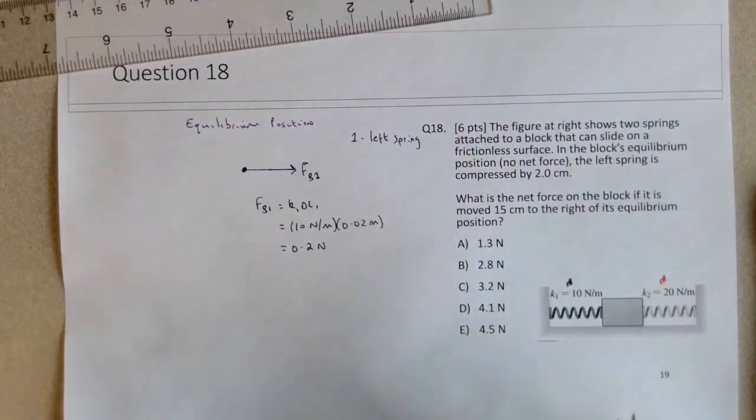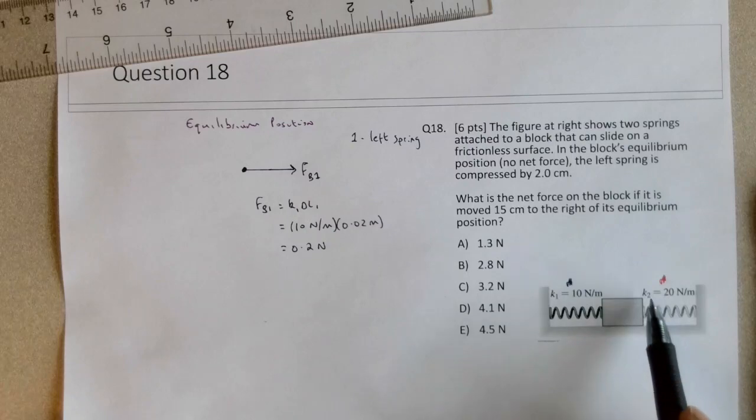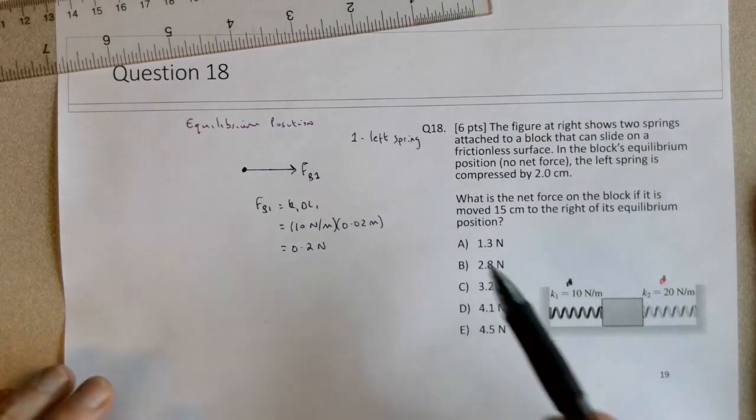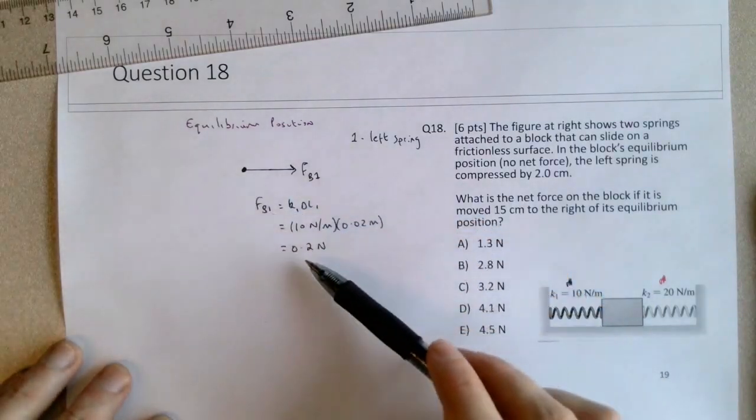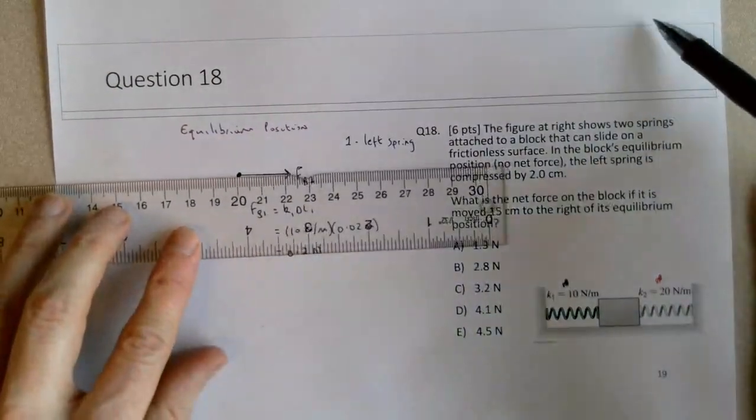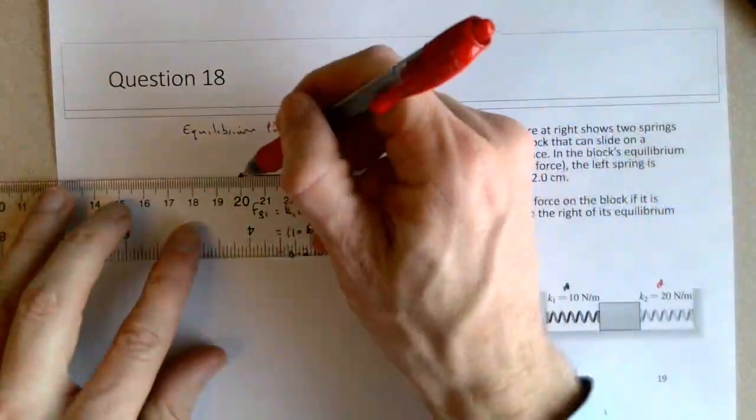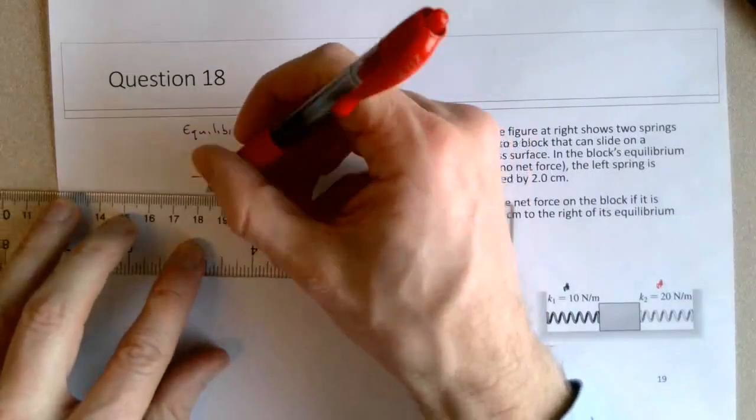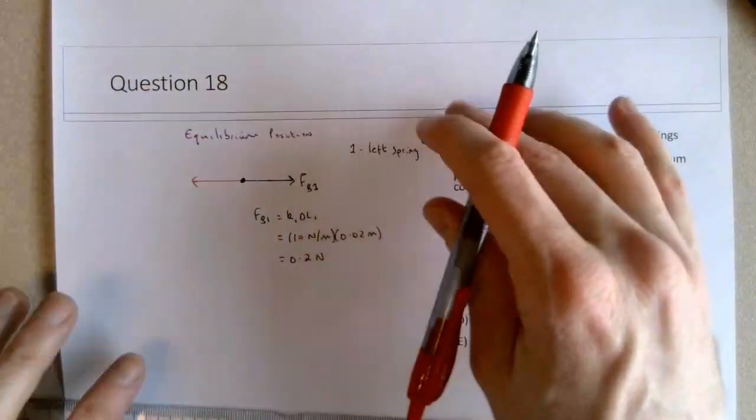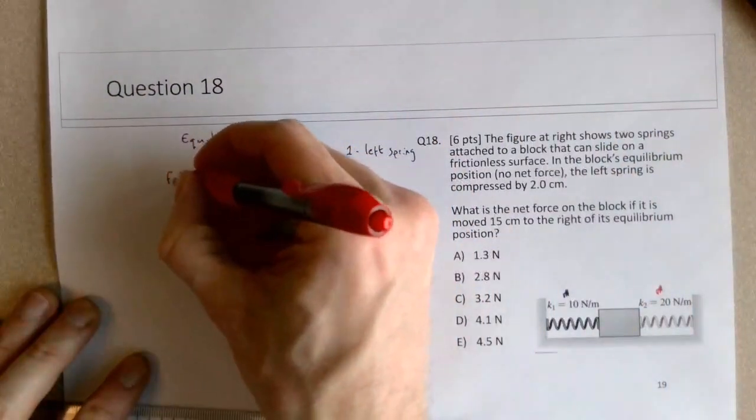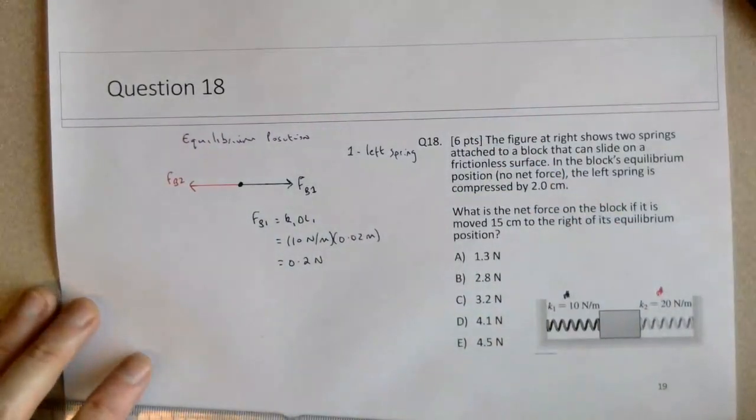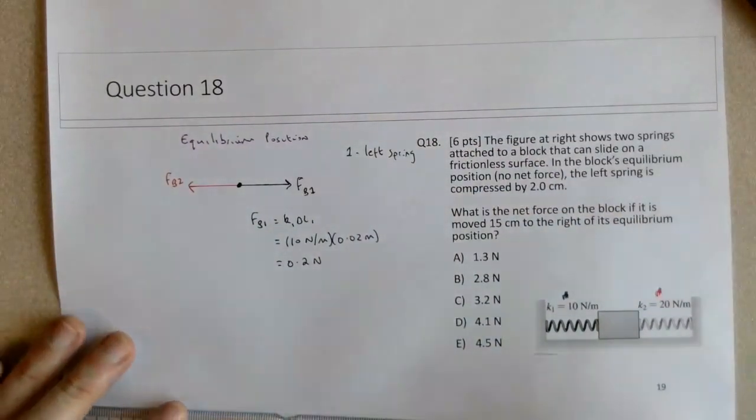So for the net force on the block to be zero, the right spring, or spring 2, has to push to the left with the same size force. So there must also be a force here by spring 2. So this is Fb2. It must also equal 0.2 newtons.